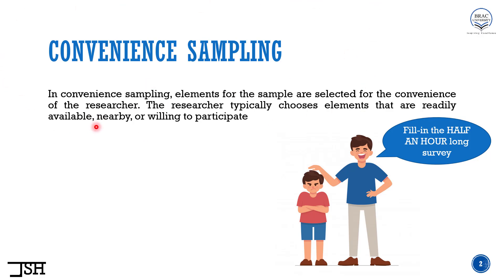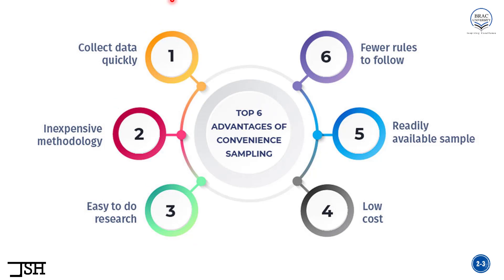In convenience sampling, the researcher looks at their own convenience first. What are the basic benefits of convenience sampling? I have listed down six benefits, and these are really easy. In convenience sampling, you can collect data quickly — obviously, because you are looking at your convenience first. Then it is inexpensive, easy to do research, low cost, readily available sample, and fewer rules to follow. All of these points are really easy to understand.